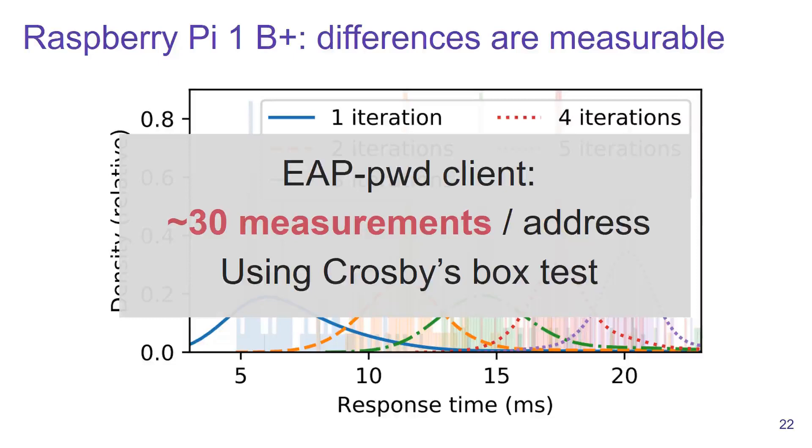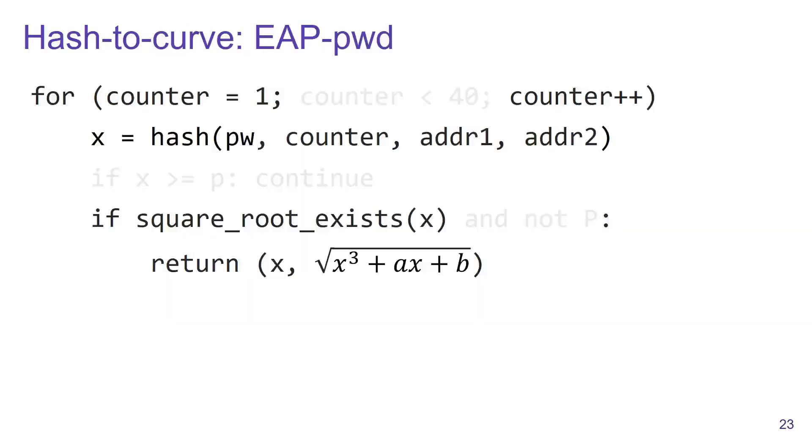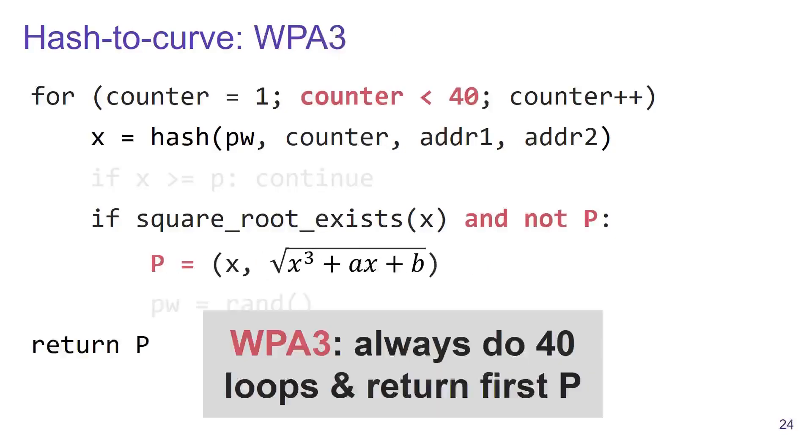When they standardized WPA3, they did realize that this algorithm had some side channel issues and tried to prevent them. The first thing they did with WPA3 is they always made the algorithm execute 40 iterations and returned the first x and y coordinate that lies on the curve.